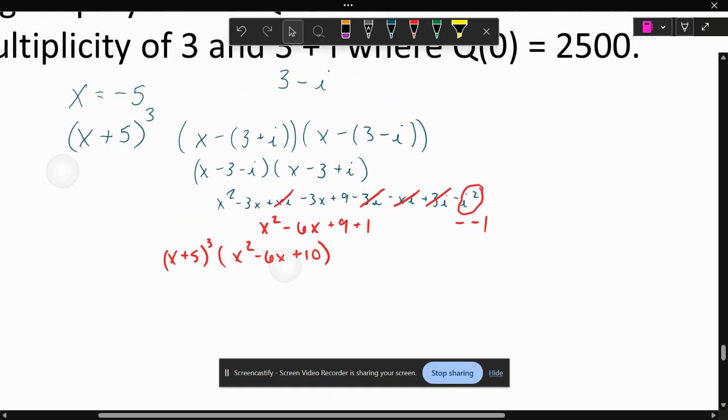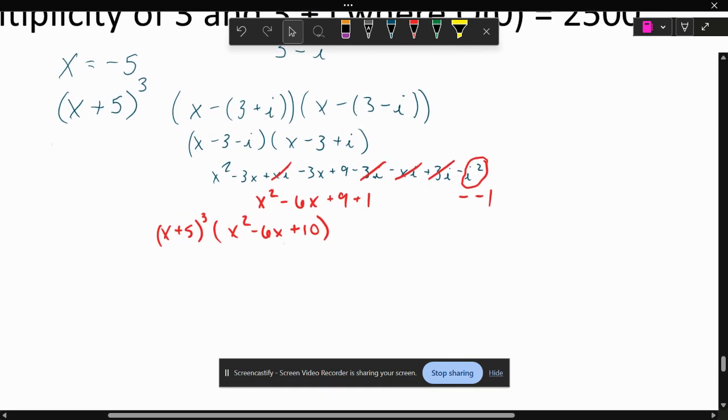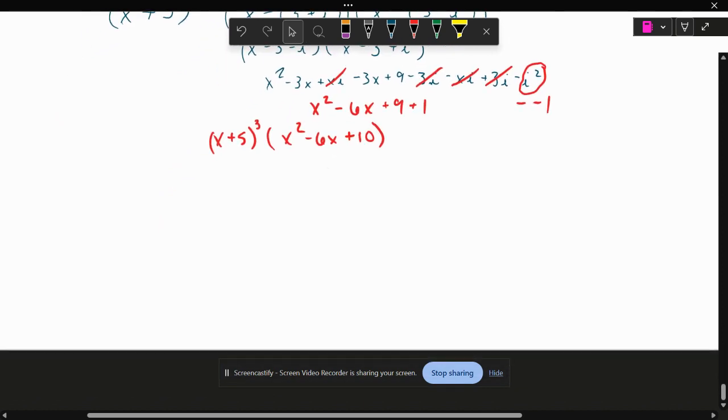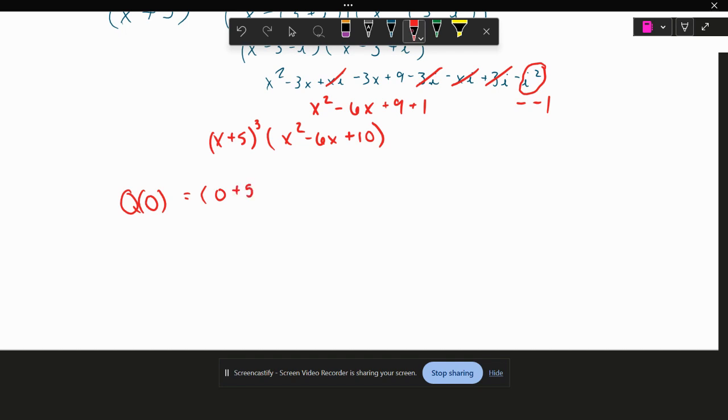Where the Q(0) equals 2,500 comes in. If I plug in Q(0) into this equation, I get zero plus five cubed times zero squared minus six times zero plus 10.